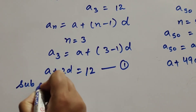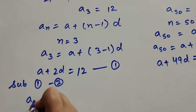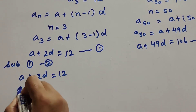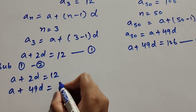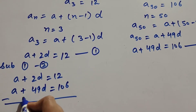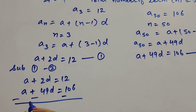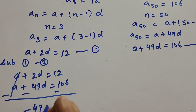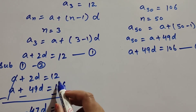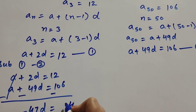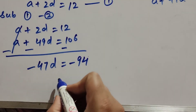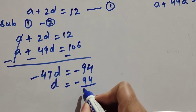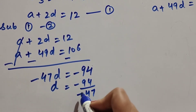Now we find the value of A or D. We subtract equation 1 minus equation 2. Equation 1 is A plus 2D equals 12, and equation 2 is A plus 49D equals 106. When we subtract, signs are changed. A minus A is cancelled. 2D minus 49D equals minus 47D, equal to 12 minus 106, which equals minus 94. So D equals minus 94 over minus 47.